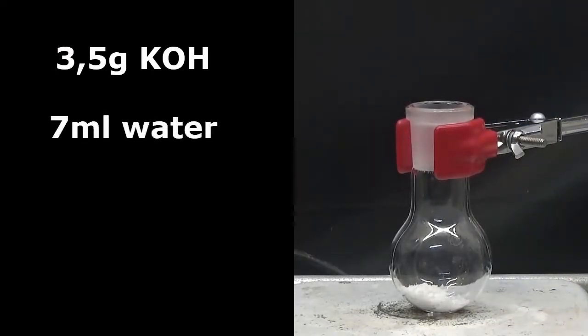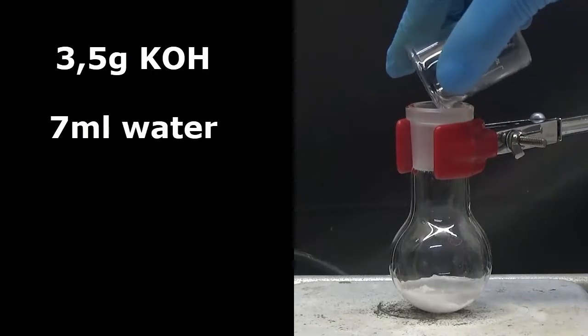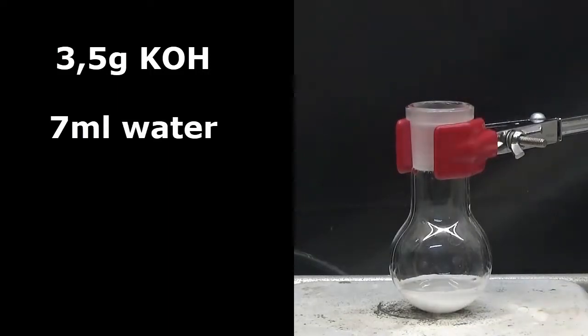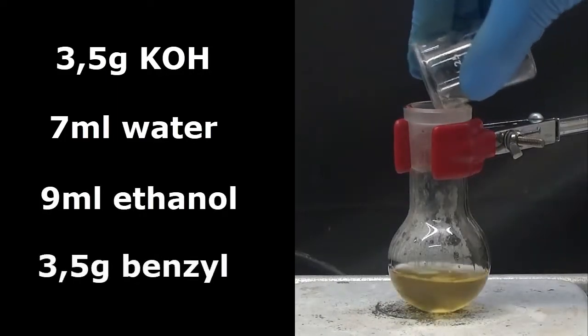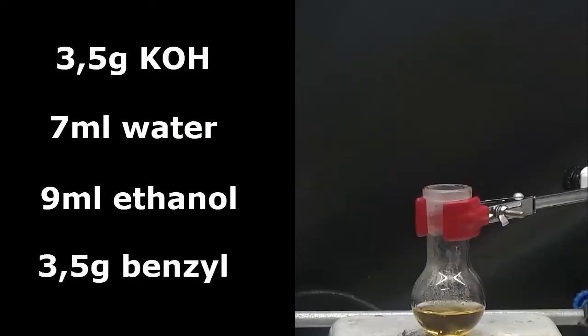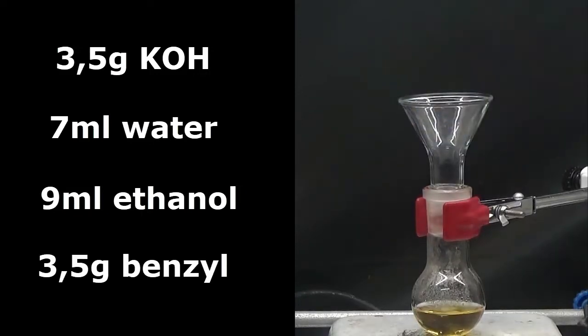...diluted in 7 milliliters of water in a 100 milliliter flask, heated if necessary to promote dissolution. 9 milliliters of ethanol and 3.5 grams of benzyl are added to this solution and heated in reflux for 30 minutes.